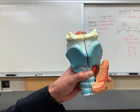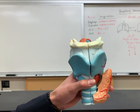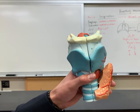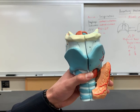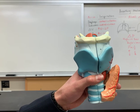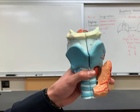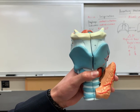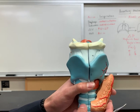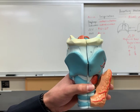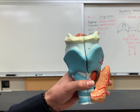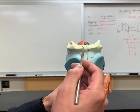All right Bobcats, so in this video I'm going to go over the Alta larynx model. Before I get started, make sure to hit that like button and also subscribe to the channel for more videos. We'll go over some of the basic structures first and then get into some of the muscles and ligaments.